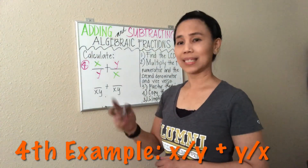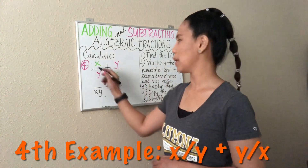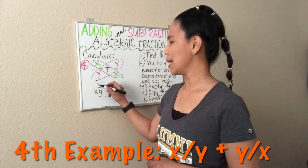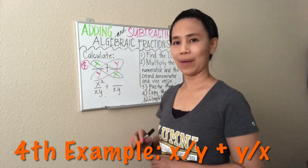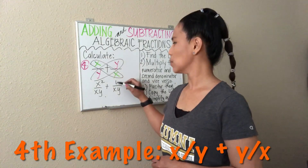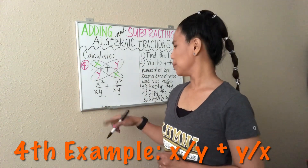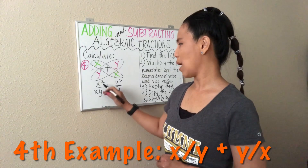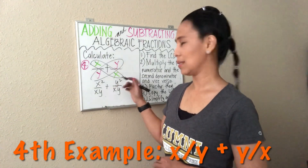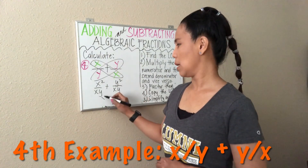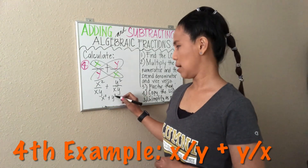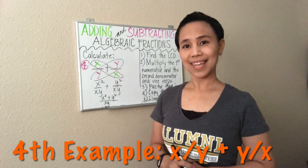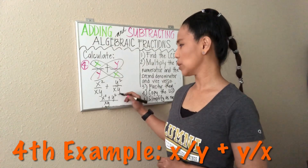Again, the next step is to apply the butterfly approach by multiplying these pairs. X times X would be X squared. And Y times Y is Y squared. So we are now ready to add the numerators. Since they have different variables, they are unlike terms, so we just copy them: X squared plus Y squared. And then copy the LCD, which is XY. That's it — our final answer is X squared plus Y squared over XY.